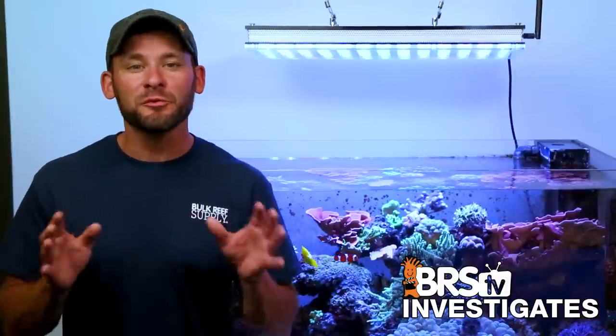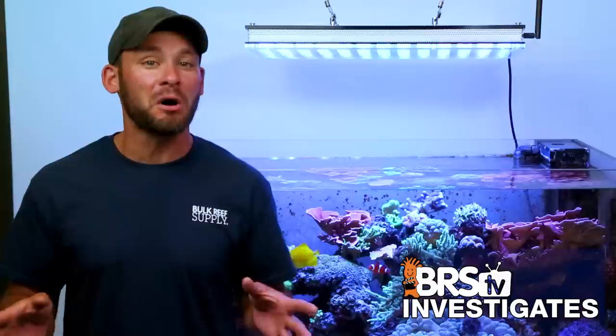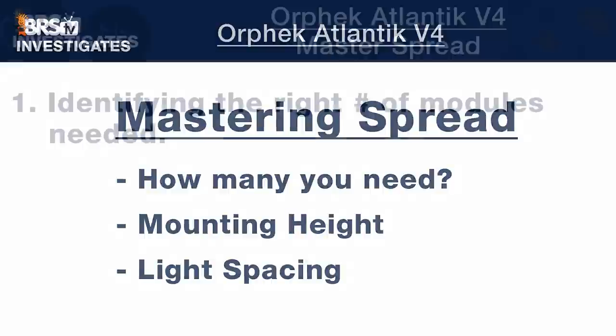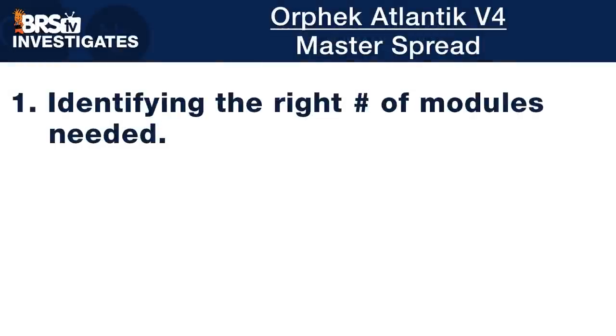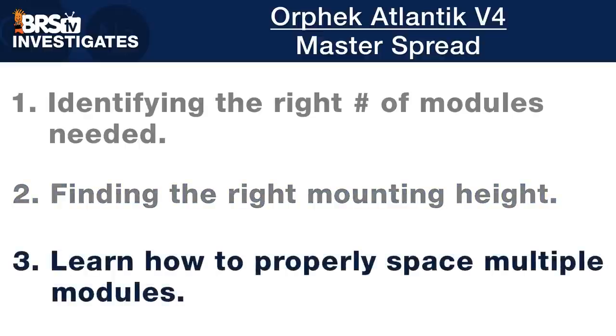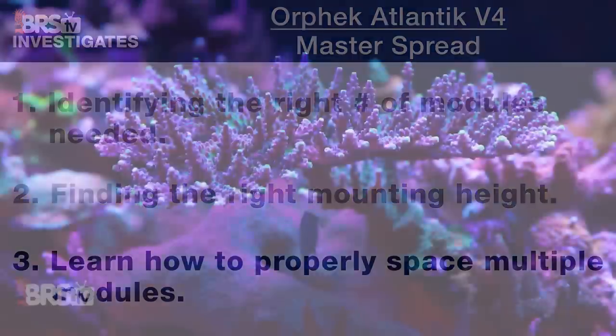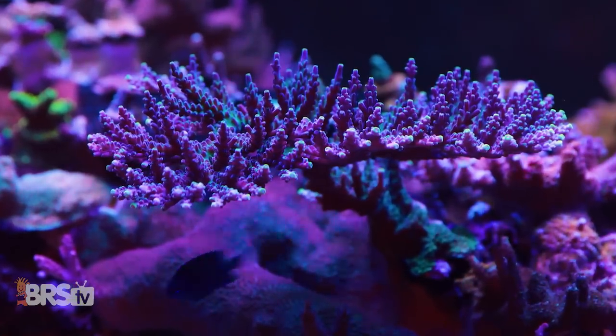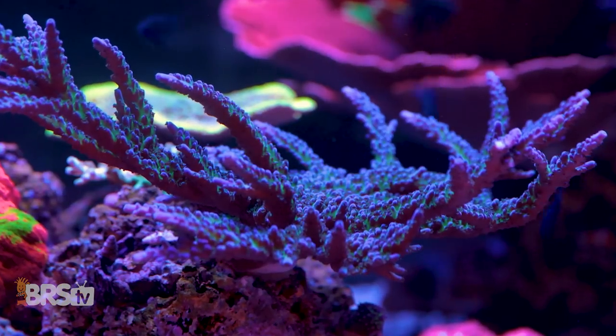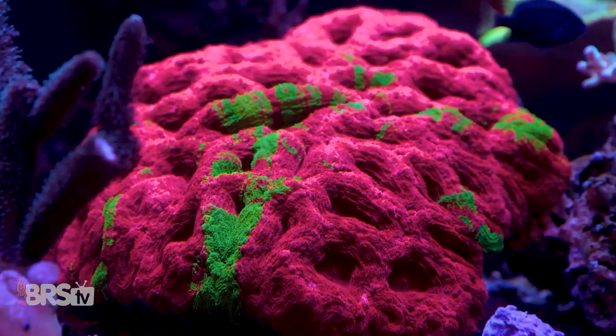So with that, let's dive right into today's testing and review the results for spread, spectrum, and PAR from the Orphic Atlantic V4. Starting with our test to determine its spread by identifying the right number of modules for our tank type goals, finding the optimal mounting height, and learning how to properly space multiple modules if necessary, all three with the goal of achieving an even spread of light intensity that wraps around our corals and minimizes hotspots, cold spots, and shadowing.